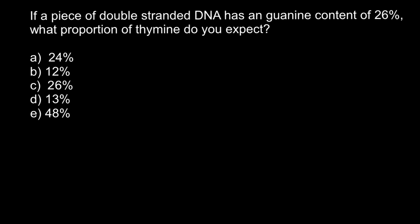In order to solve this problem, everything you have to know is that in double-stranded DNA, guanine always base pairs with cytosine, and thymine always base pairs with adenine. We are told that guanine makes 26%.